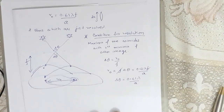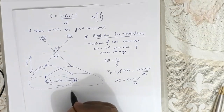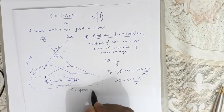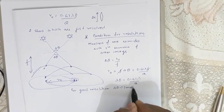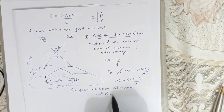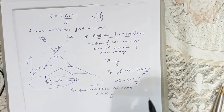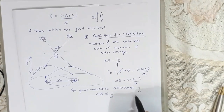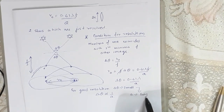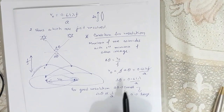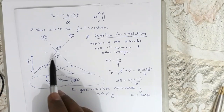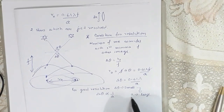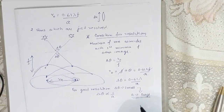For good resolution, this angle delta theta should be small. Since delta theta is inversely proportional to a, for good resolution delta theta should be small and a should be large. It is for this reason that if we want a telescope with good resolution, its objective must have a large diameter. This is about the resolving power of a telescope.